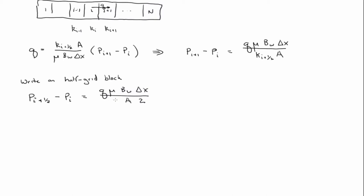Now, what K should we use? Before we were writing it right at the wall, so it was K_{i+1/2}, but now we're still inside the grid block. And remember, the permeability in the grid block is the same everywhere. So if we're in the I-th grid block, we use K_i.